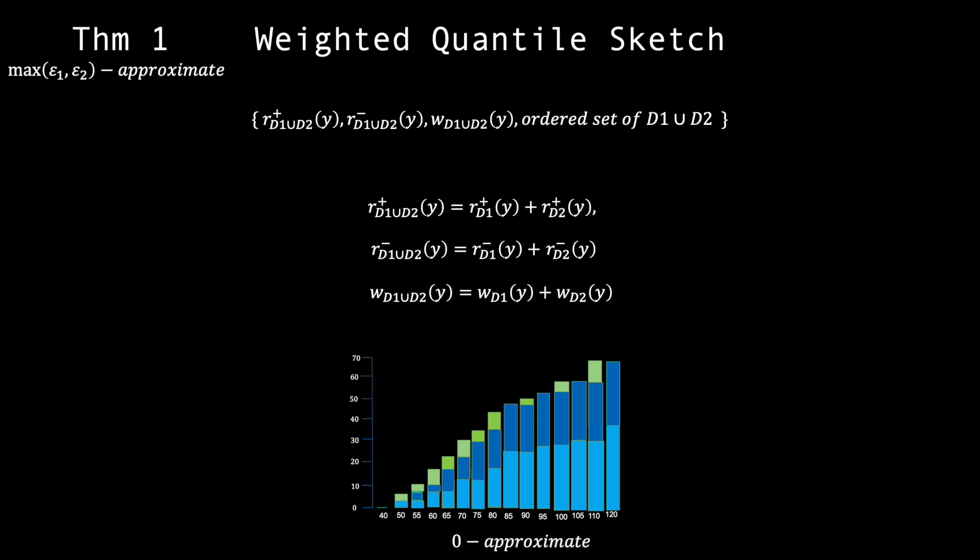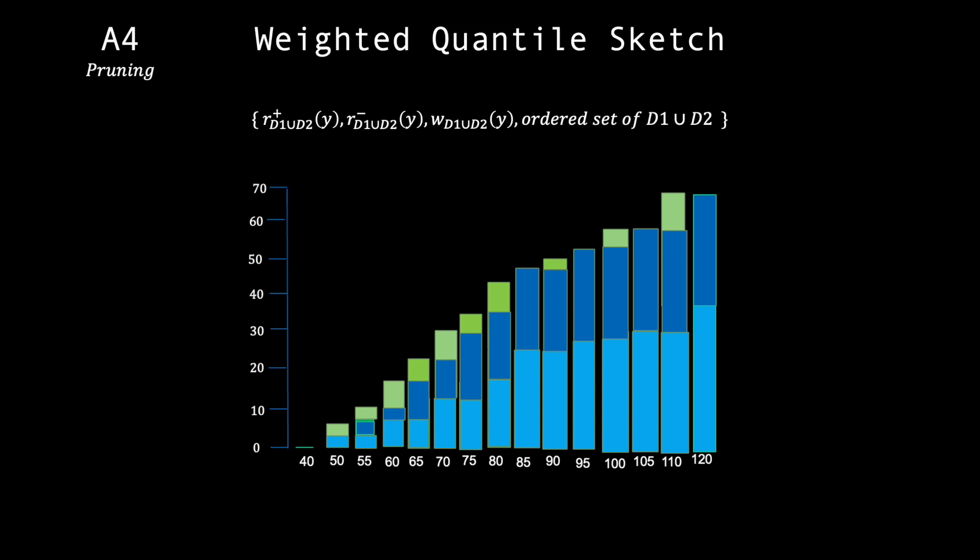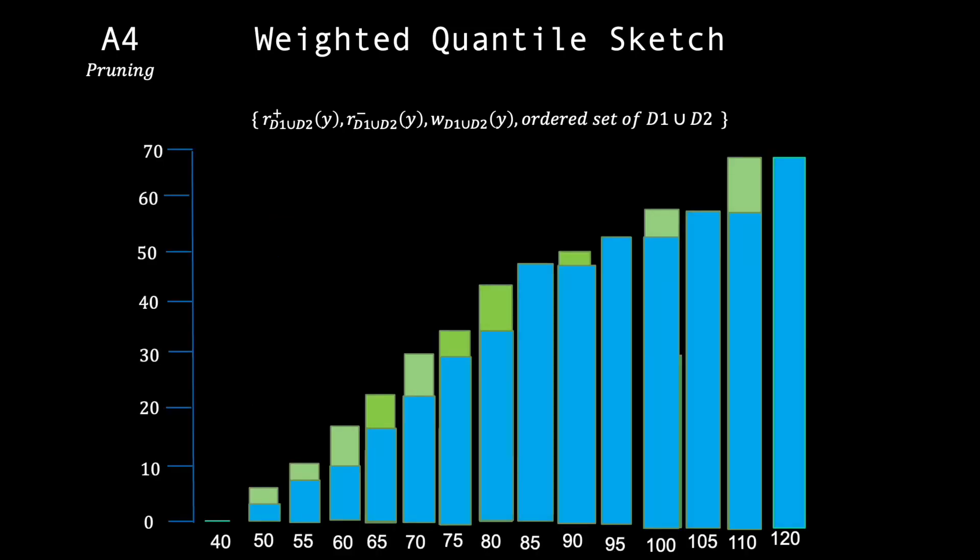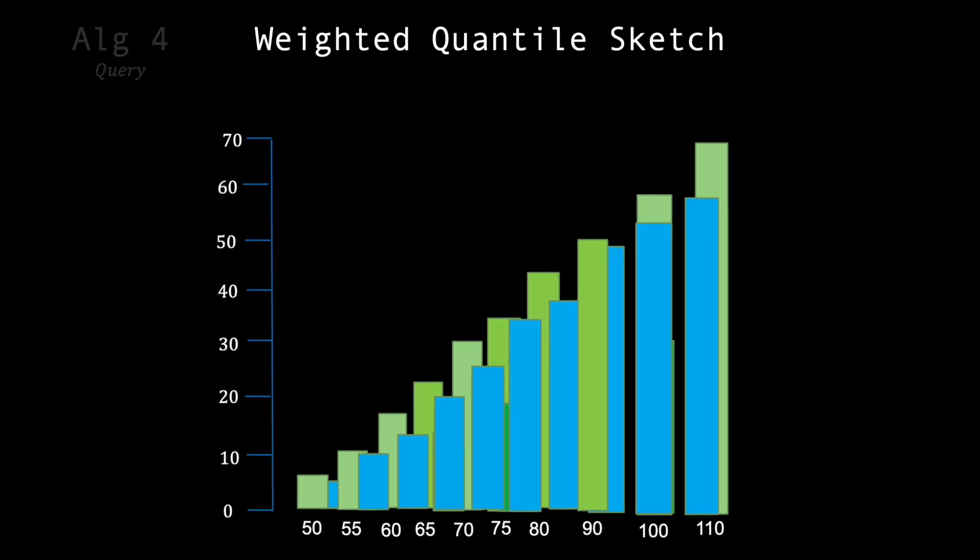So we have been able to combine both summaries, but the memory usage is still large. We need to find a way to reduce it. That is where pruning comes in. Pruning allows us to reduce the size of a quantile summary with the trade-off of increasing our epsilon error.